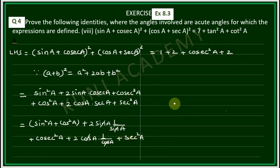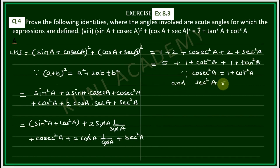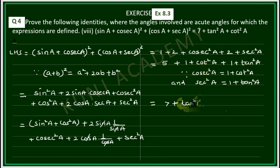So sin²A + cos²A = 1, plus 2 plus 2 gives 1 + 2 + 2 = 5. Then cosec²A can be written as 1 + cot²A and sec²A can be written as 1 + tan²A. So 5 + 1 + 1 = 7, plus tan²A + cot²A, which is equal to the right hand side. Proved.